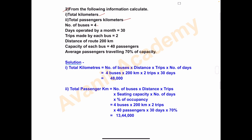Number of buses: 4. Days operated per month: 30 days. Trips made by each bus: 2. Distance of route: 200 kilometers. Capacity of each bus: 40 passengers — meaning in one bus, 40 passengers can travel. Average passengers traveling: 70 percent of capacity, meaning the bus is 70 percent full, so the occupancy rate is 70 percent.